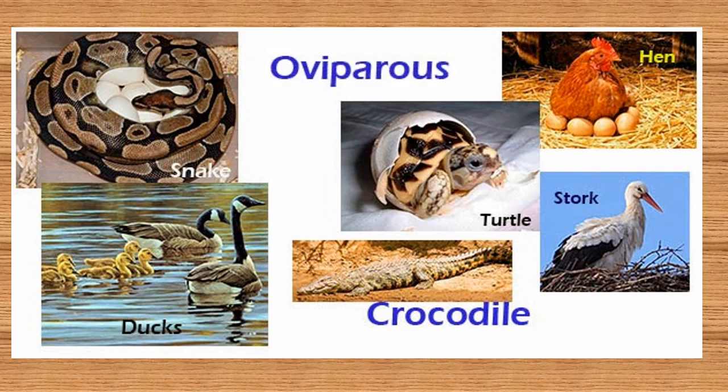Here are some examples of oviparous animals: snake, ducks, hen, turtle, crocodile, stork, and so on. They all lay eggs.